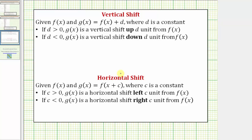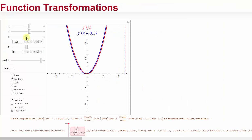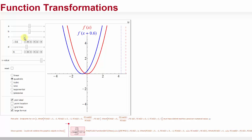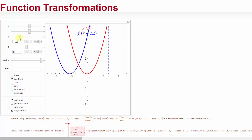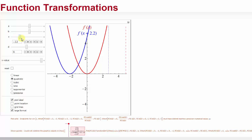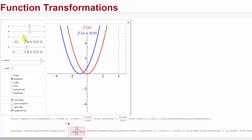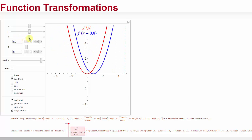And if c is less than zero or negative, meaning we have x minus a constant inside the parenthesis, then g of x is a horizontal shift right c units from f of x — again, maybe the opposite direction we might think. Let's verify this with our animation. If we have f of the quantity x plus a constant, the graph is shifted left. And if we have f of the quantity x minus a constant, the graph is actually shifted right.